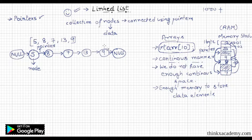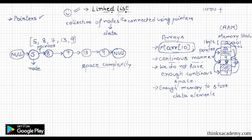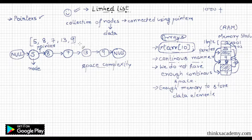This approach is useful because data can be stored in a non-continuous manner using pointers. This type of problem is known as a space complexity problem. The main reason why linked lists are more efficient than arrays is for cases when we do not have enough continuous memory blocks. The basic idea is to place data elements at random positions in memory and use pointers to point to the memory references of these data elements.